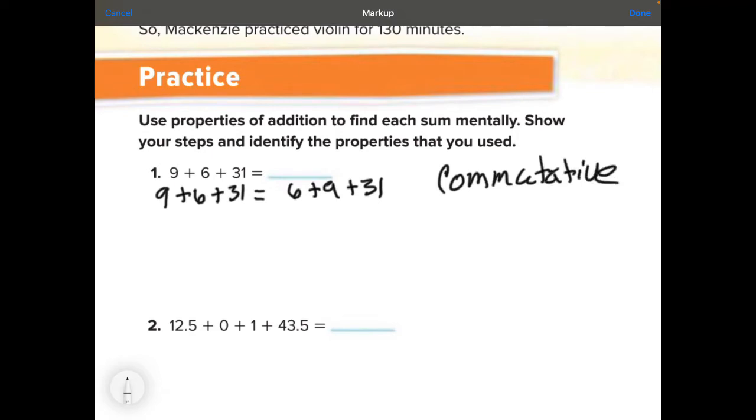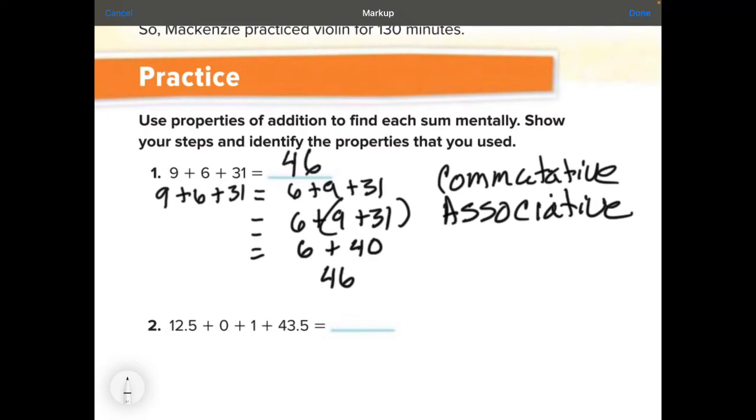Draw your equation sign again. Now we're going to associate a couple of these numbers together that are a little bit easier to add mentally than the others. We're going to associate those two numbers together so it's easier in our head and 31 plus 9 is going to be a beautiful number of 40. I'm going to add that 6 to it and I know that 6 plus 40 is a beautiful number of 46. So I'm going to put 46 up here and there is all of the labeling for your number 1.